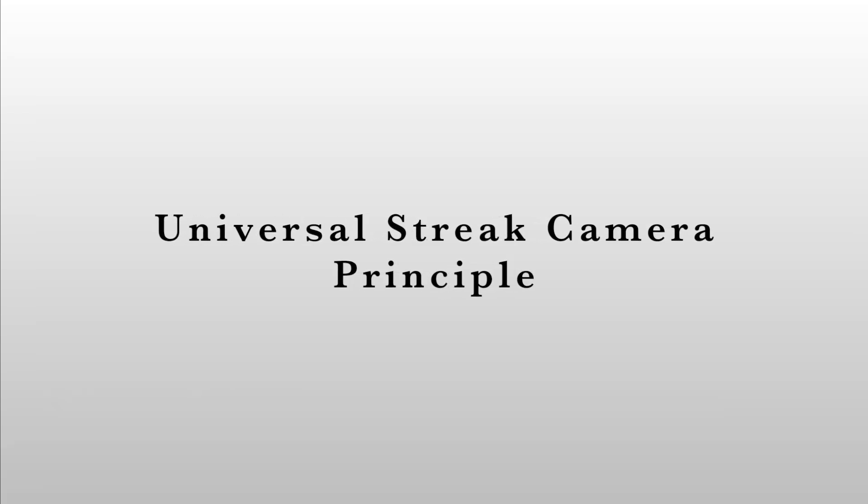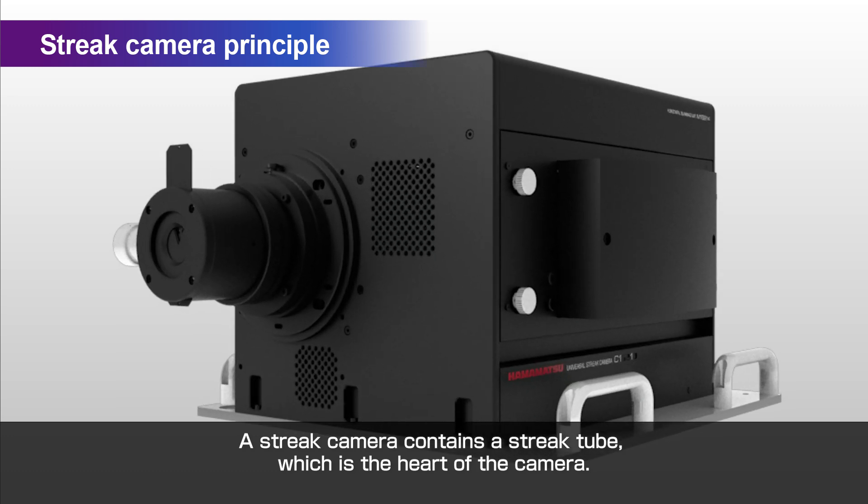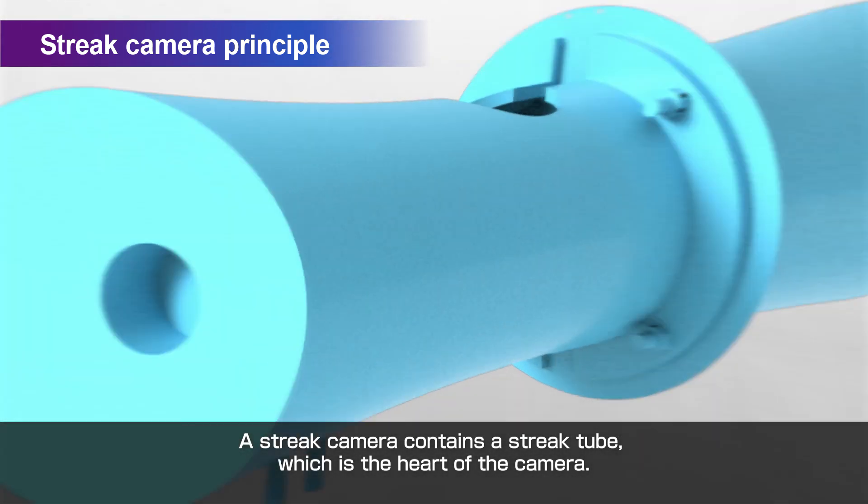This is how a streak camera works. A streak camera contains a streak tube, which is the heart of the camera.